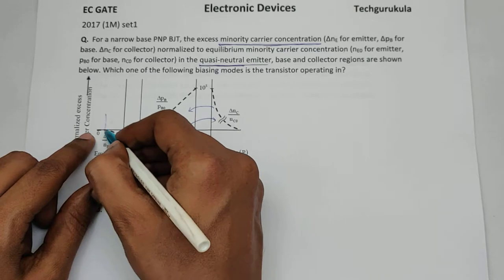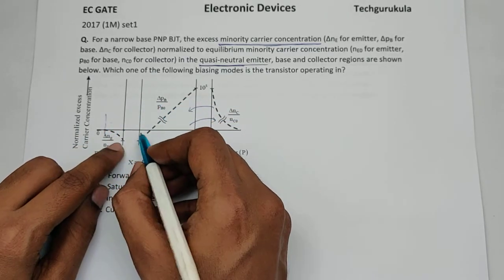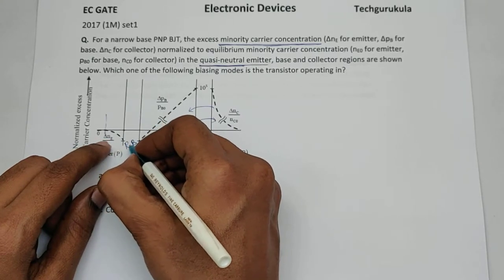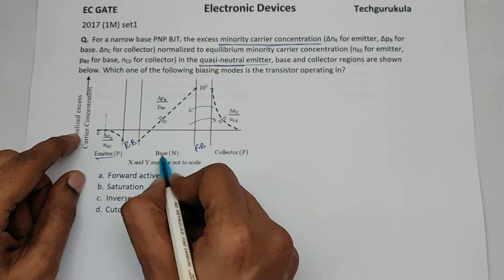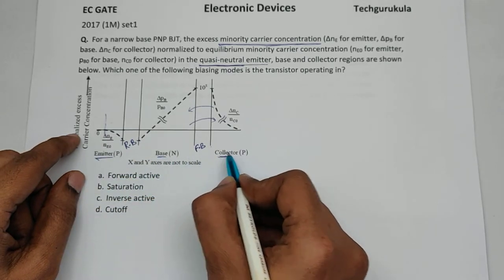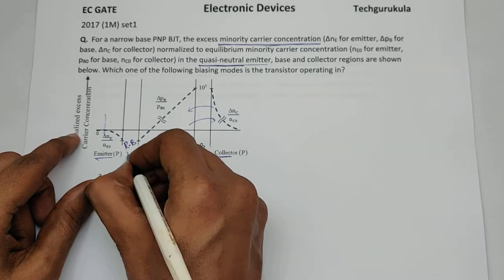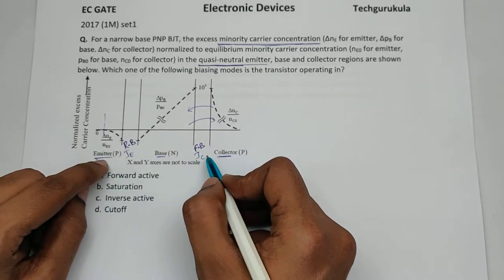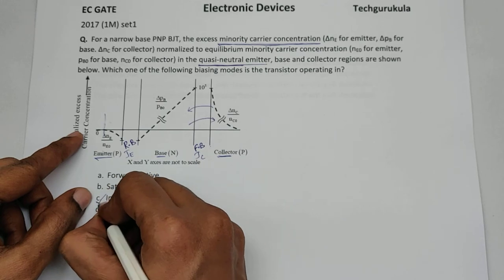the carrier concentration is very small, literally zero, which means this junction is definitely reverse biased. As given, this is emitter, this is base, and this is collector. The collector junction is forward biased, the emitter junction is reverse biased. This is definitely inverse active mode, so the answer is inverse active.